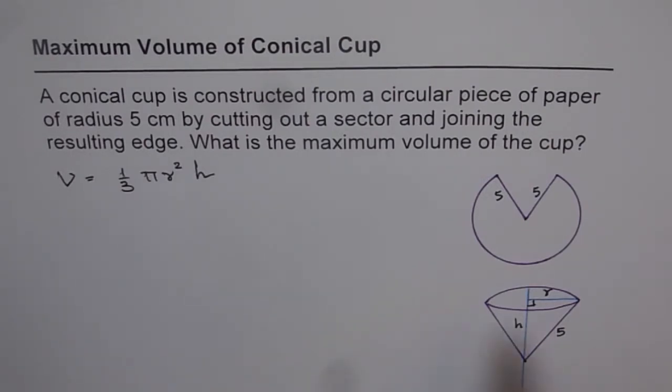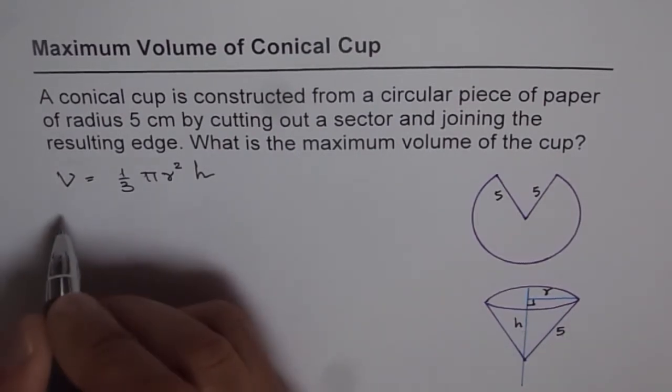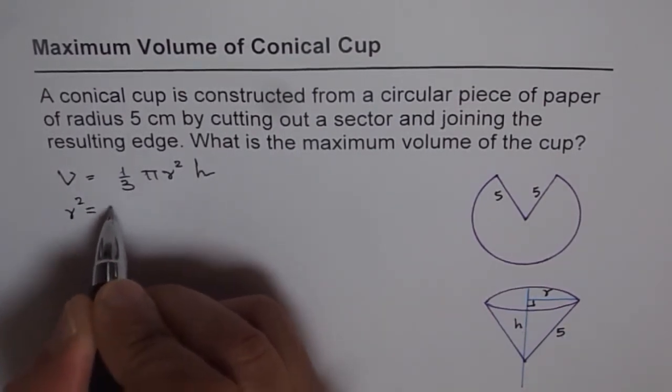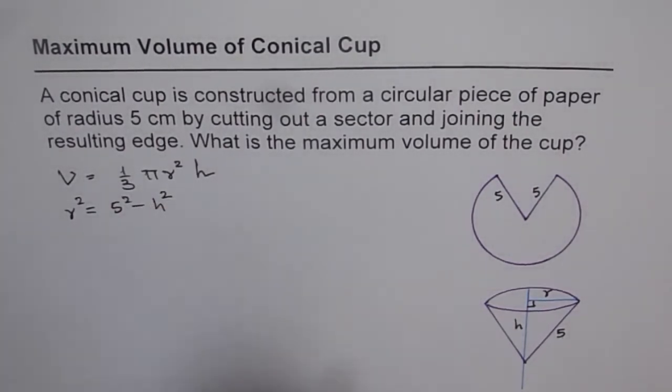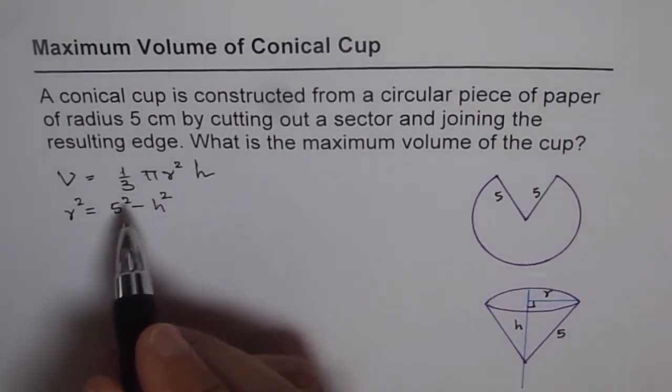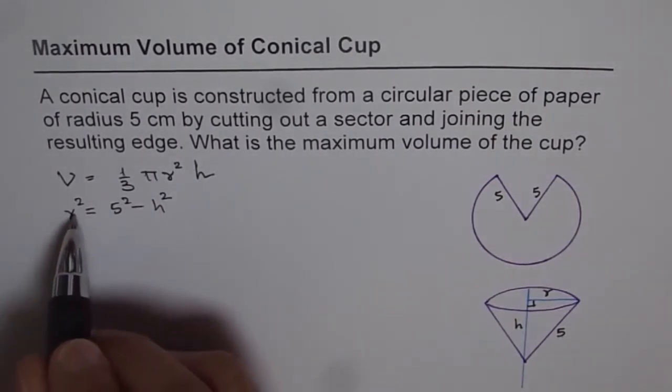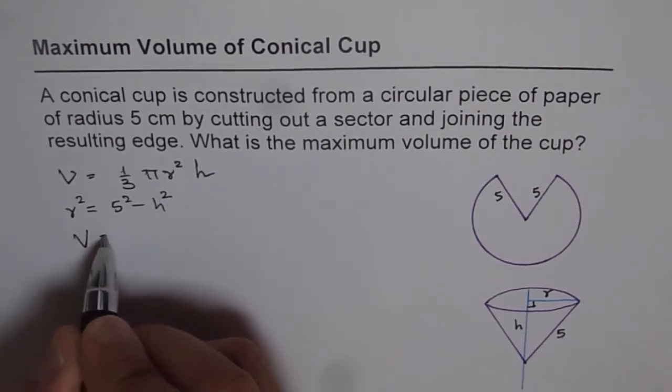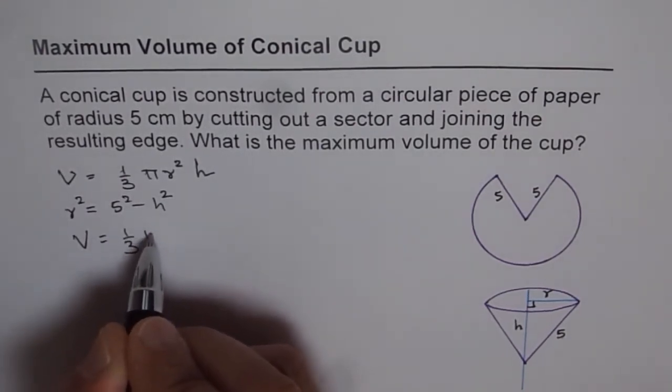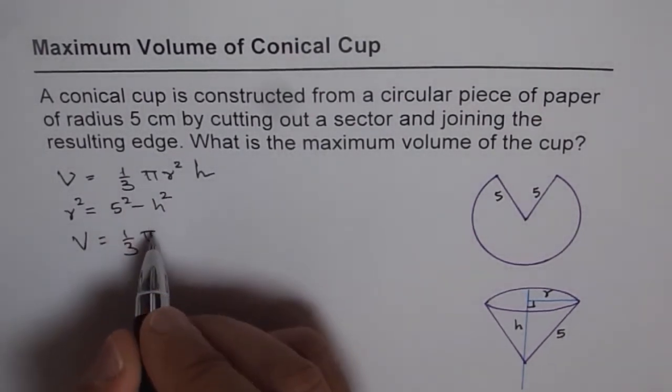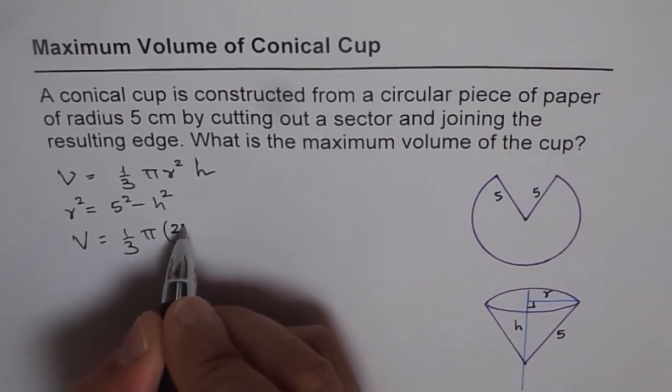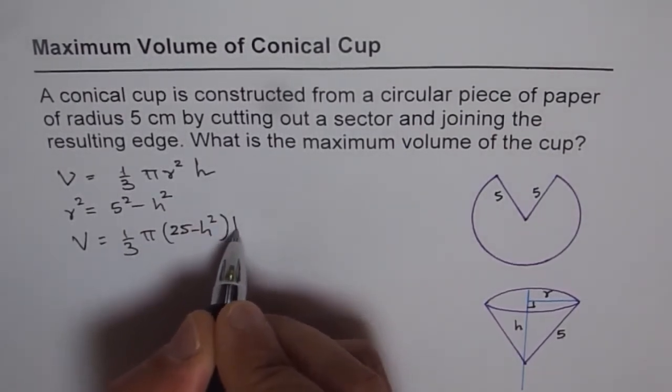So let's find relation between r and h with the help of this right angle triangle. We will use Pythagorean theorem. So we get r square equals to 5 square minus h square. Let's write it: r square equals to 25 minus h square. We need r square, so no need to change this. So substitute this value here.